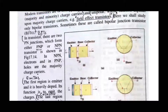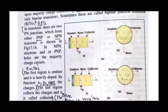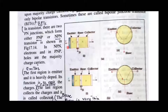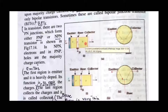Bipolar junction transistors are of two further types: NPN transistors and PNP transistors. Now we will discuss the construction. Bipolar junction transistors consist of three regions and three electrodes. The first one is known as the emitter, the second is the base, and the third is the collector.